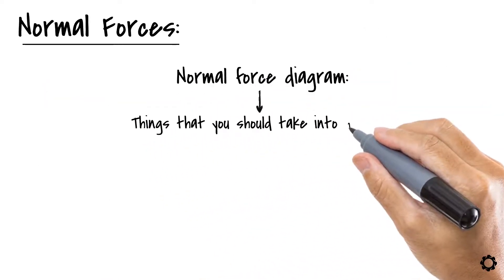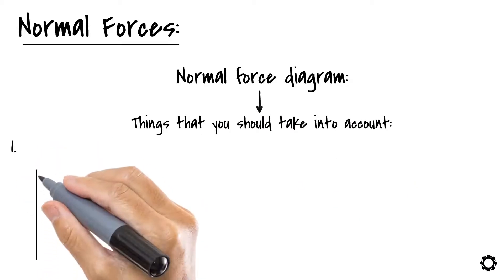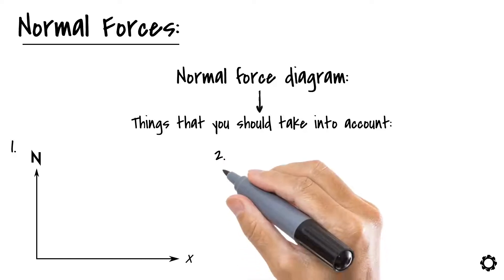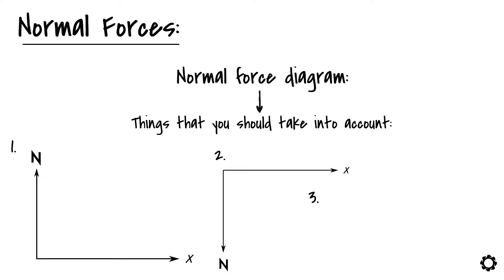For defining the normal force diagram, there are some things that you should take into account. The first thing is that the vertical axis of the diagram represents the magnitude of the loading and the horizontal axis represents the point in the structure's length. The second thing is that we usually mark the positive loading to be under the horizontal axis. And finally, for drawing the diagram, it's recommended that you use the free body diagram of the structure where the external loads are labeled and the support reactions are also solved and labeled.